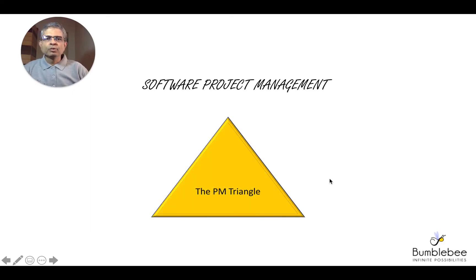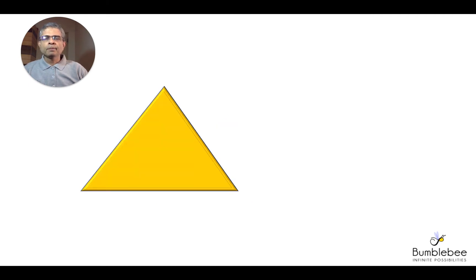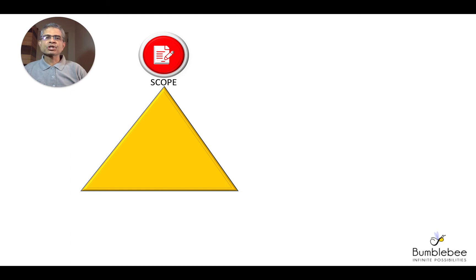Hello friends, today we shall be looking at the project management triangle, which is a key tool that helps the project manager to manage the project. The project management triangle speaks about the three constraints within which the project manager has to manage any project. The first constraint, or the first side of the triangle, is the scope or the business functionality which the project manager has scoped out in discussions with the client.